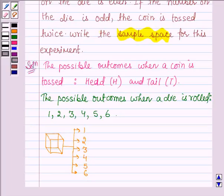The question says a coin is tossed if an even number turns up on the die. The even numbers are 2, 4, and 6. When the coin is tossed, the possible outcomes are head or tail in all three cases.